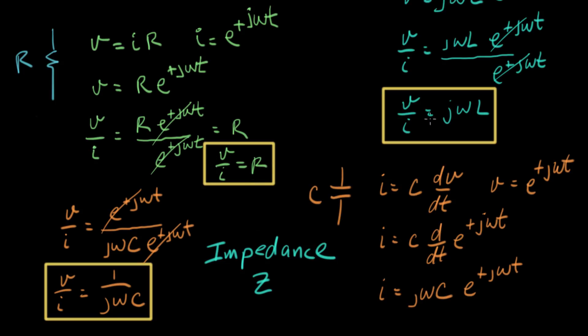It's the general concept of voltage divided by current. But for a resistor, the impedance is the resistance. For an inductor, the impedance, V over I, is j omega L. And for a capacitor, the impedance is one over j omega C. So this is where the idea of impedance, this word impedance, this is where it comes from.